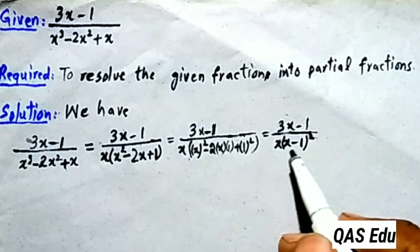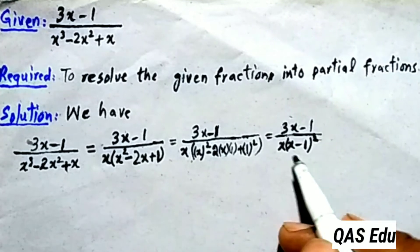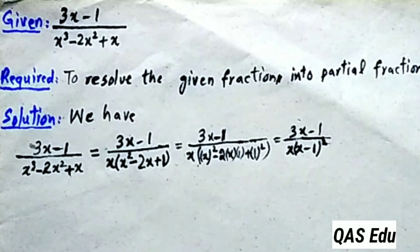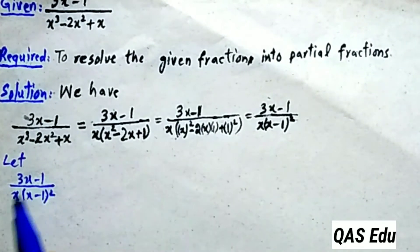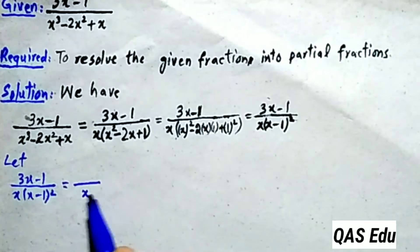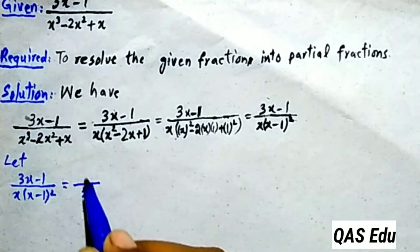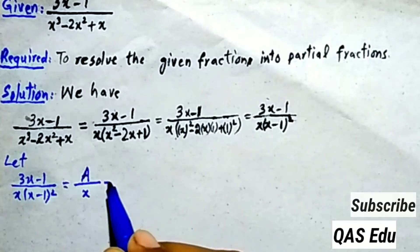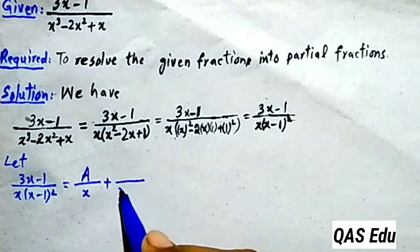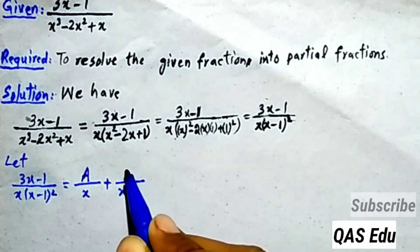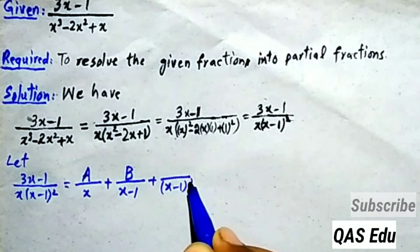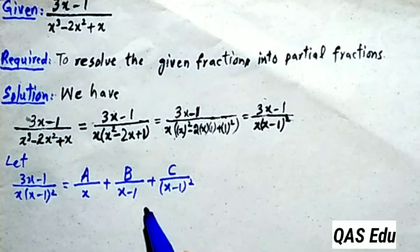So, let (3x-1) over x(x-1)² be equal to A over x plus B over (x-1) plus C over (x-1)². This is equation number 1. We have 3 partial fractions to resolve. A, B, and C are constants to be determined.